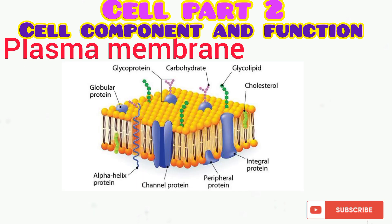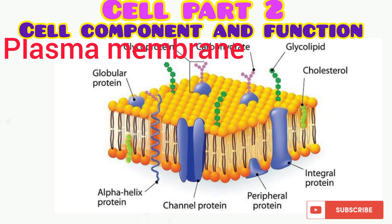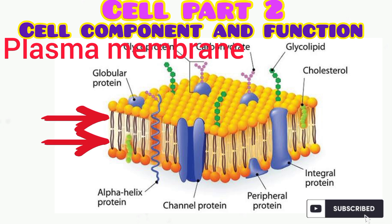The second component is the plasma membrane, also regarded as the cell membrane. It is a semi-permeable membrane that separates the inside of the cell from the outside. As you can see from the diagram, the fundamental structure of the plasma membrane is a phospholipid bilayer — simply meaning two layers of phospholipid.